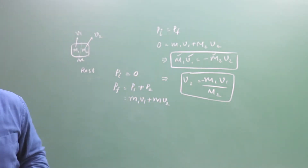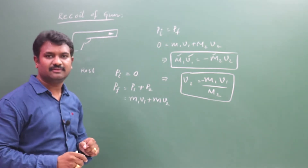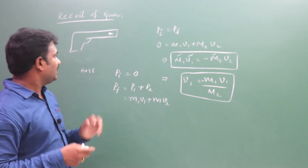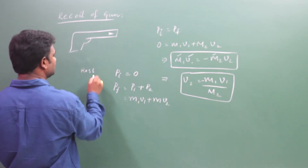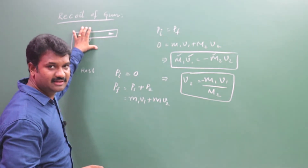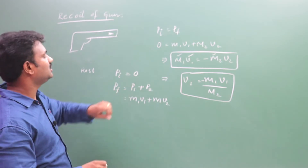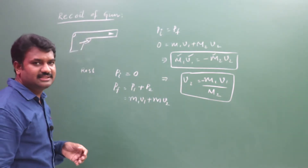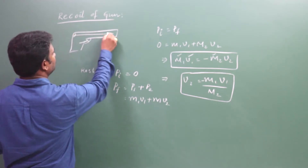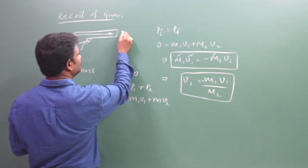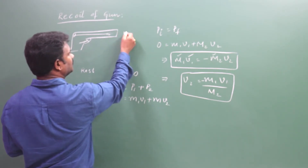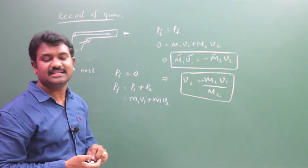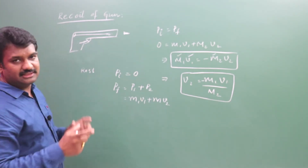The same concept applies to the recoil of a gun. Imagine a gun with a bullet loaded — assume initially the system is at rest, so the momentum of the gun-and-bullet system is zero. If one fires the gun by clicking the trigger, a piston pushes the bullet and the bullet moves out of the gun.